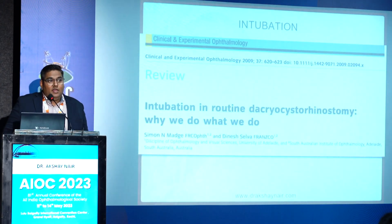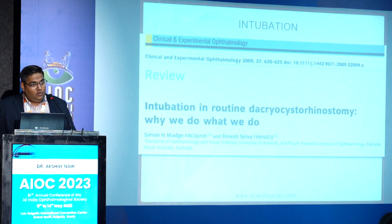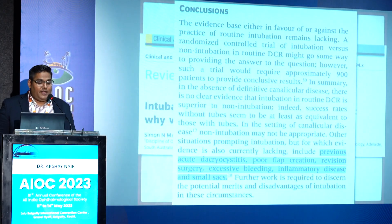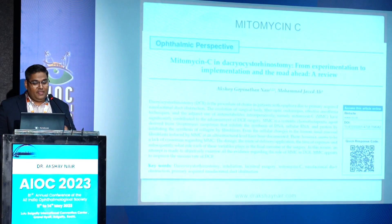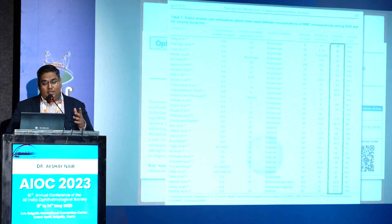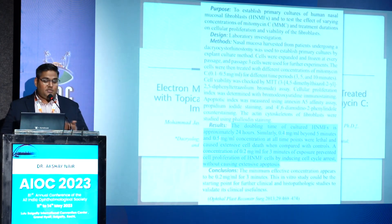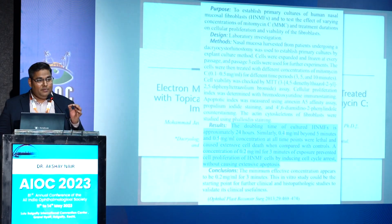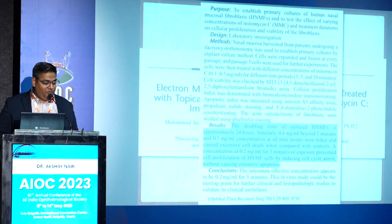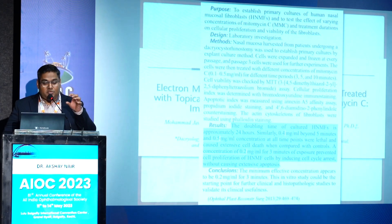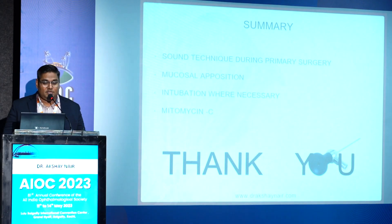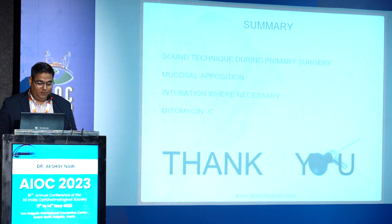On the question of when to intubate: there is no clear class one evidence that intubation is better than non-intubation, but anecdotal evidence suggests that in patients with previous dacryocystitis, excessive bleeding, small sacs, or small flaps, putting a tube may actually help. Regarding Mitomycin C: microscopic studies show a concentration of 0.2 mg/mL for a duration of three minutes is optimal — exceeding this in either concentration or duration leads to cell death and apoptosis, whereas we want only inhibition of fibroblasts. To summarize: sound technique during primary surgery, good mucosal apposition, selective use of intubation, and routine use of Mitomycin C is what I do, and it has served me well.